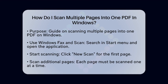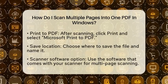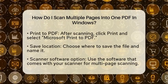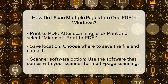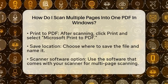You will need to scan each additional page one at a time. Once you have scanned all your pages, click the Print button. Here, select Microsoft Print to PDF as your printer. Choose where you want to save the file and give it a name. This method combines all your scanned pages into one PDF file. Keep in mind that this process requires you to scan each page separately first.